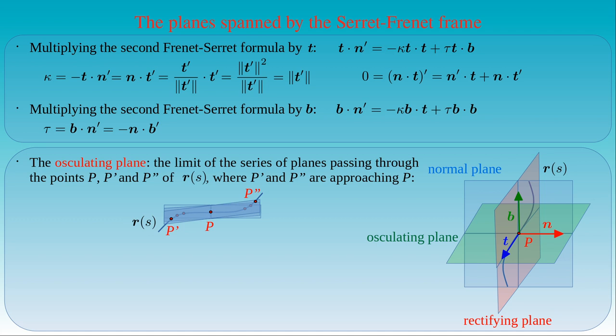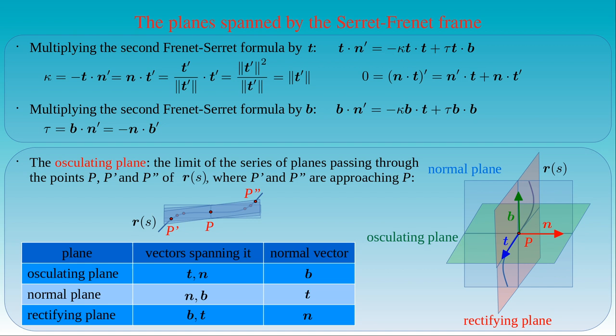In a summary table, we can list the three planes — the osculating plane, the normal plane, and the rectifying plane — along with the set of vectors spanning them and their normal vectors. The rows of the table are simply cyclic permutations of the three vectors T, N, and B. In fact, we only need the osculating plane to give the geometric interpretation of the curvature kappa and the torsion tau.